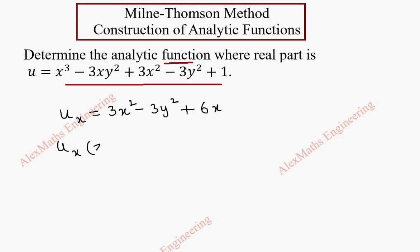Now we have to find ux(z,0), wherever x is there, which is replaced with z. So 3z² and y is 0. So we finally get 3z² plus 6z.